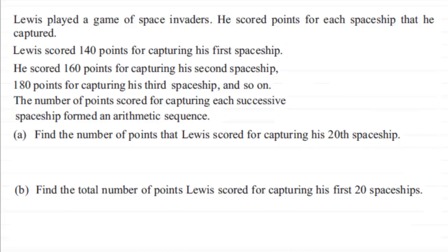Okay, welcome back. Just to recap, Lewis played a game of space invaders and scored points for each spaceship that he captured. Lewis scored 140 points for capturing his first spaceship, 160 points for his second spaceship, 180 points for his third spaceship, and so on. The number of points scored for capturing each successive spaceship formed an arithmetic sequence.